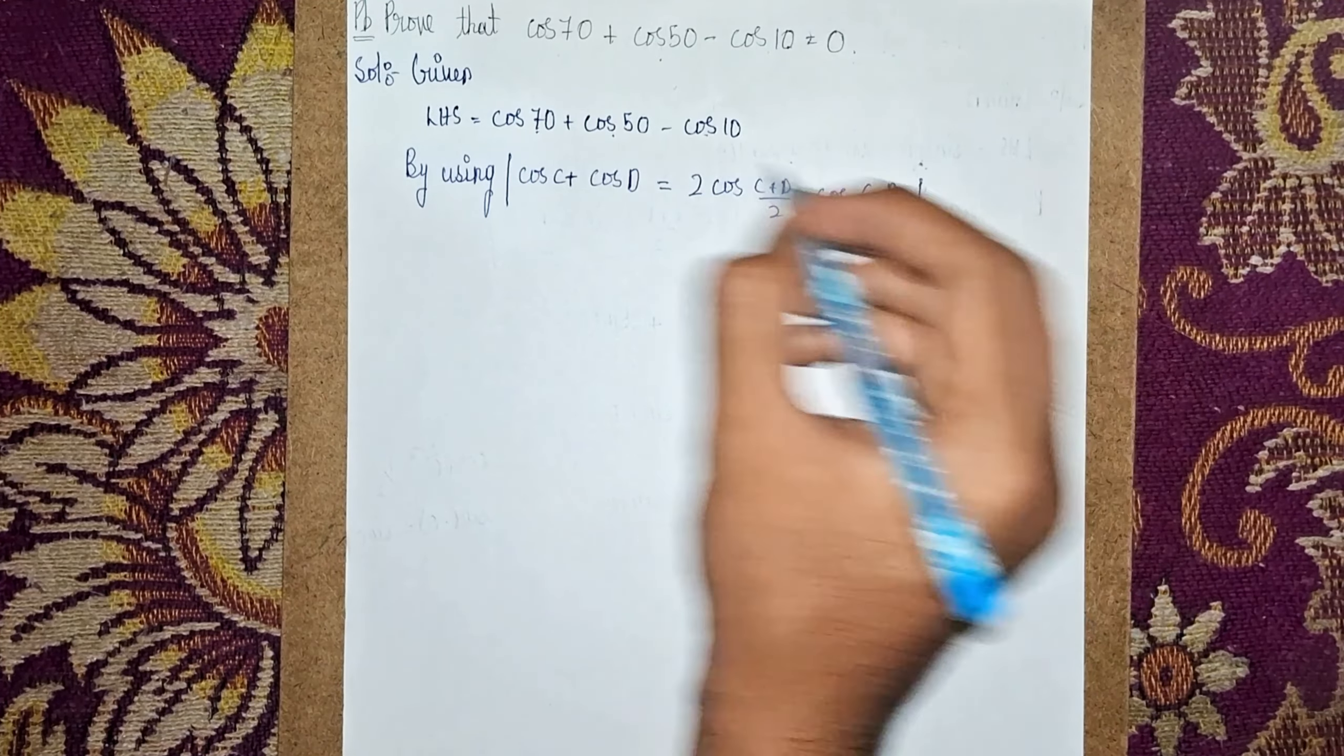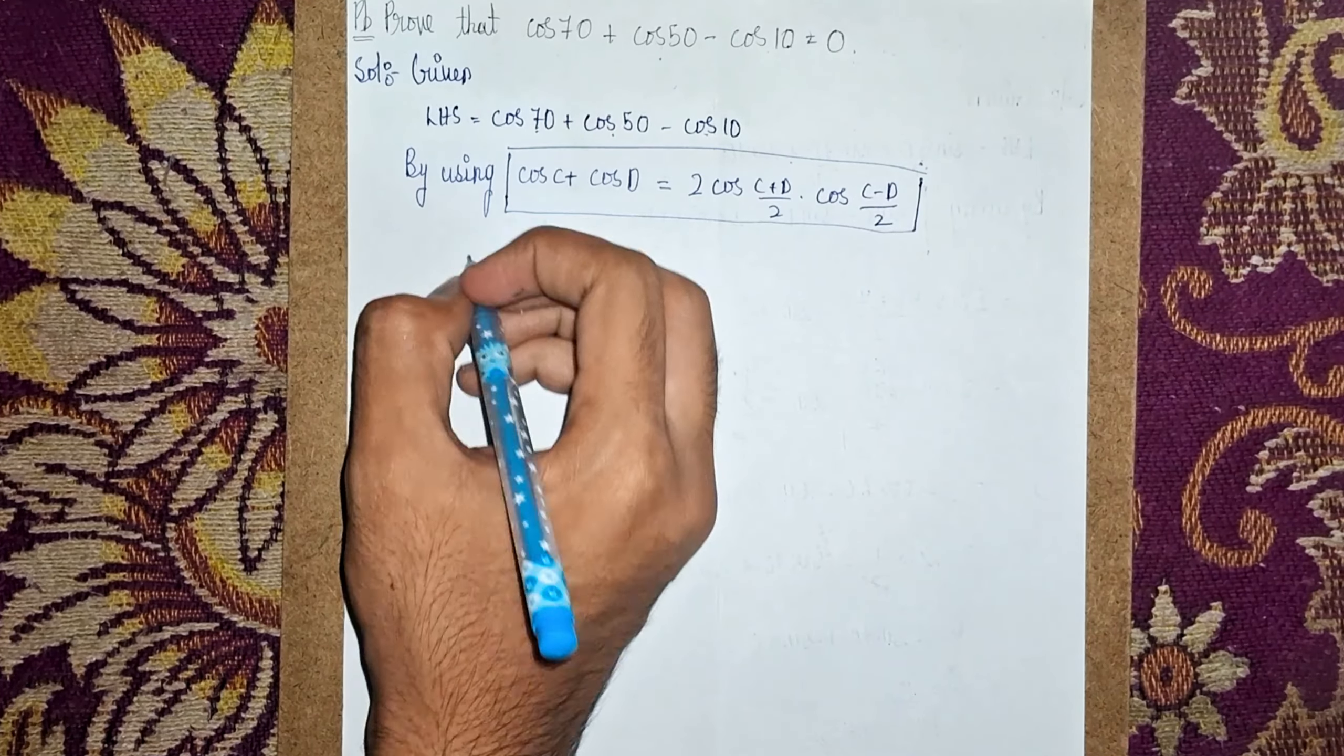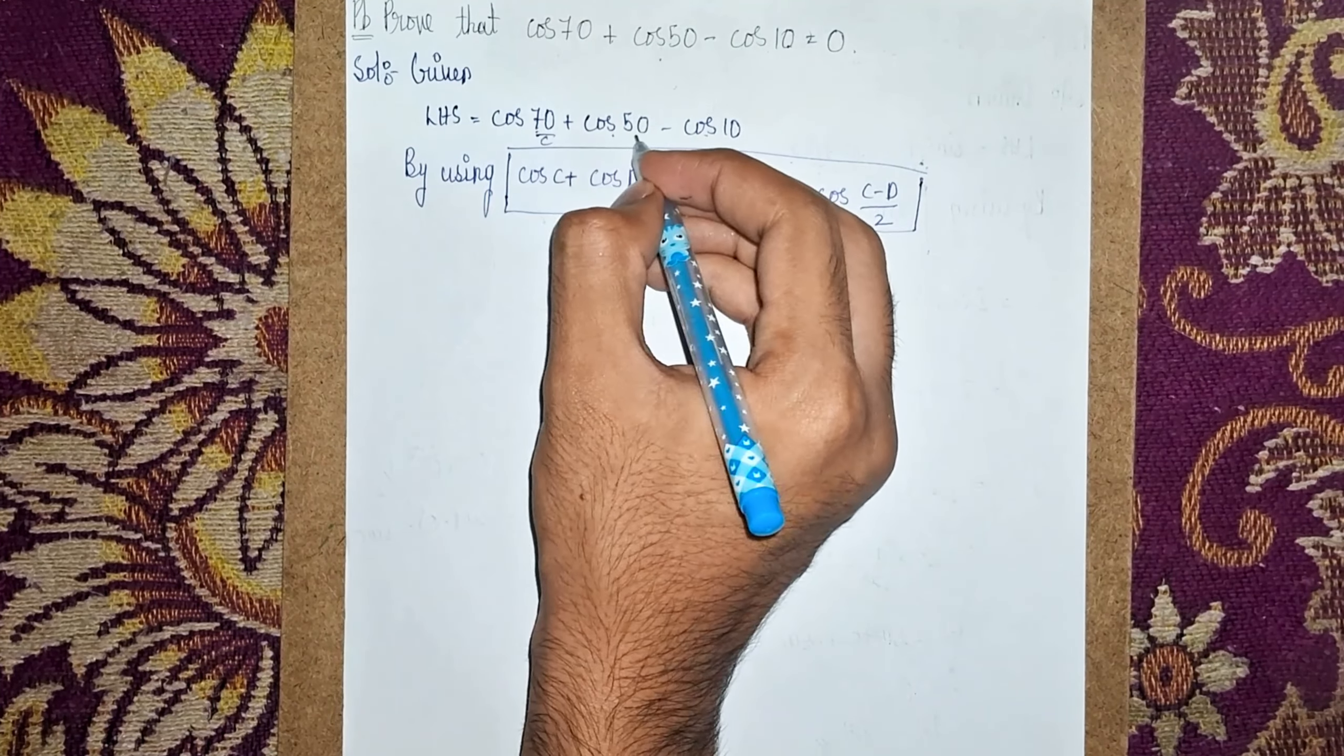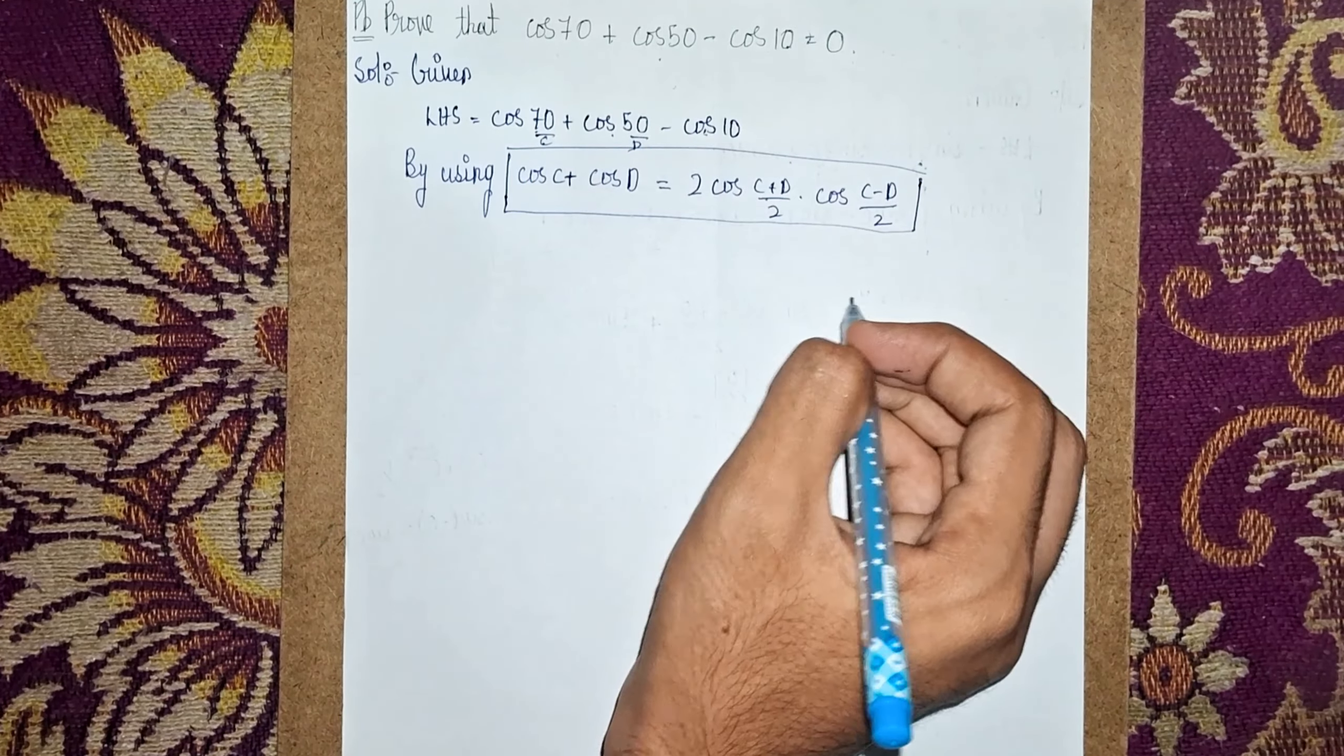Always highlight formula by making a box - it will make good presentation. Now this is our C and this is our D. Now substitute C and D and write as it is.